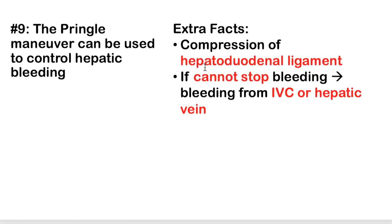You must be careful: if you perform the Pringle maneuver for eight or nine minutes, you can induce hepatic ischemia — what we call shock liver. This produces through-the-roof AST and ALT in the thousands, looking like viral hepatitis.